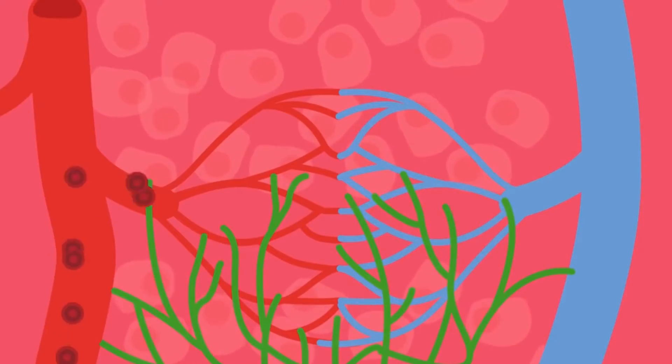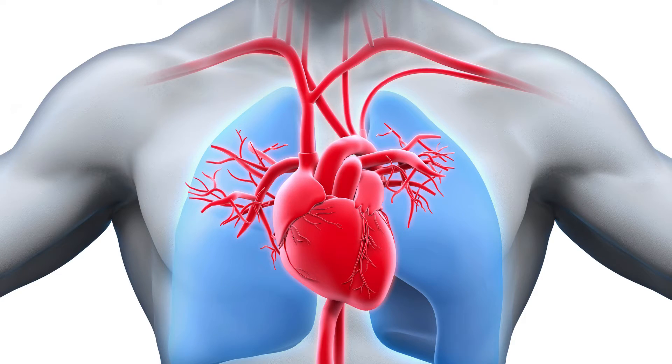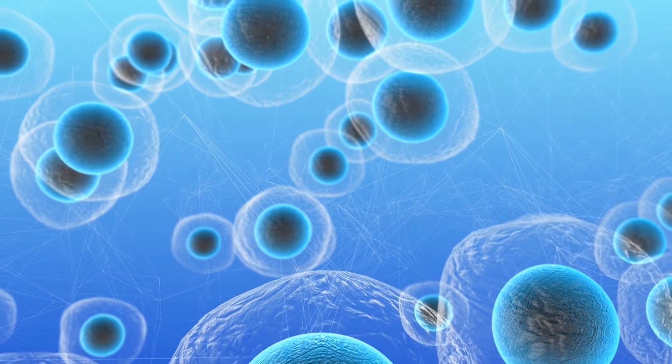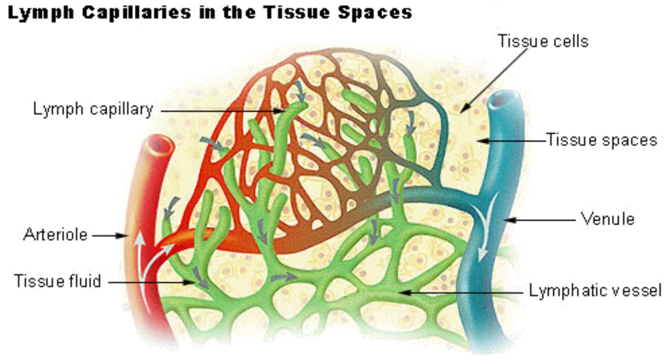The lymphatic system consists of lymph vessels, ducts, nodes, and other tissues. Around 2 liters of fluid leak from the cardiovascular system into body tissues every day. The lymphatic system is a network of vessels that collect these fluids, or lymph.